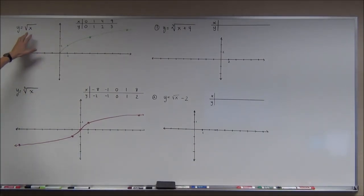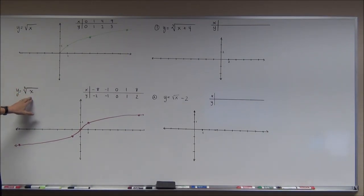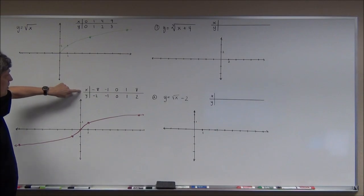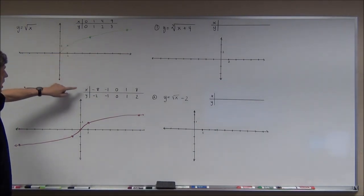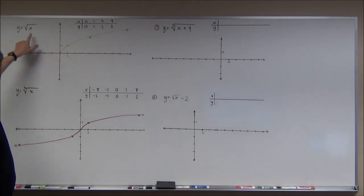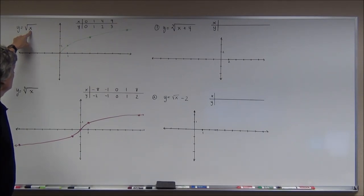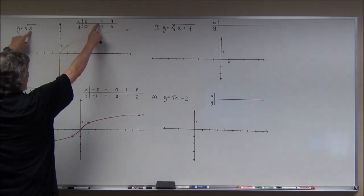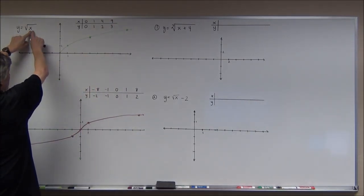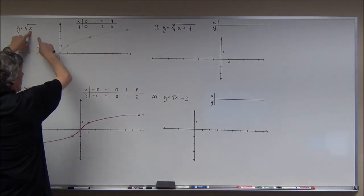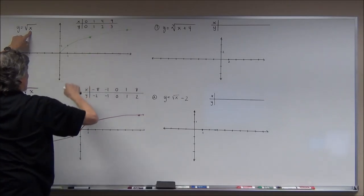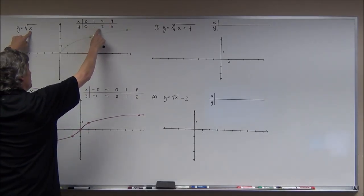I have the square root function here and I have the cube root function here. When graphing these I typically create a t-chart for x's and y's. Because the numbers I'm plugging in for x for a square root can't be negative, I'm only going to plug in numbers zero and bigger. I chose zero, one, four, and nine by design because I can take the square root of each of those. I plot these four points.